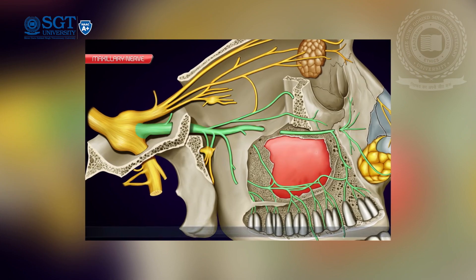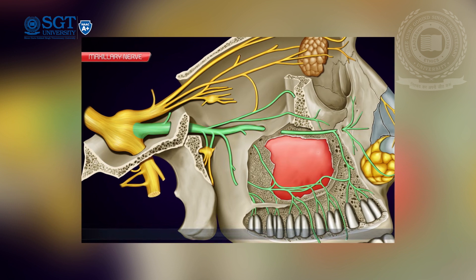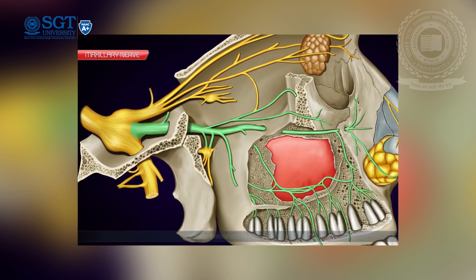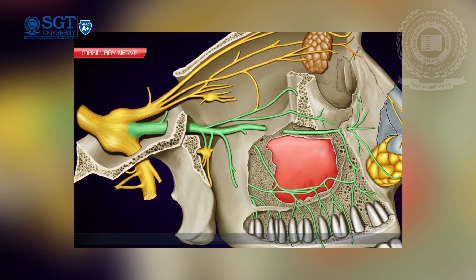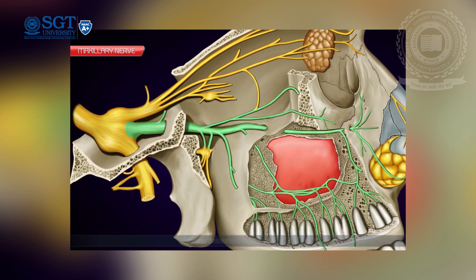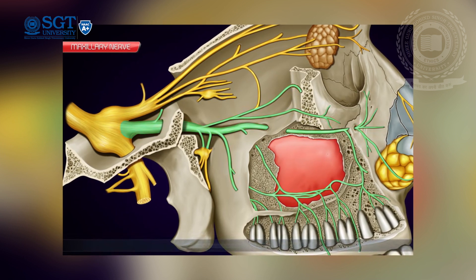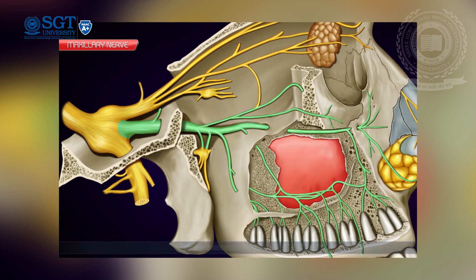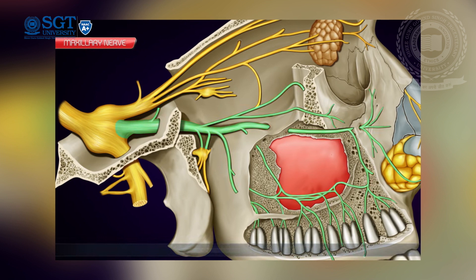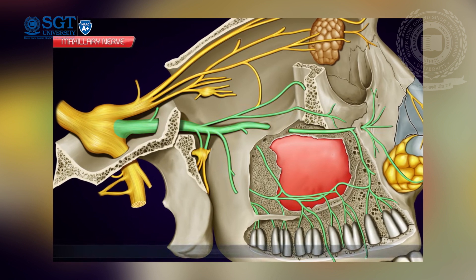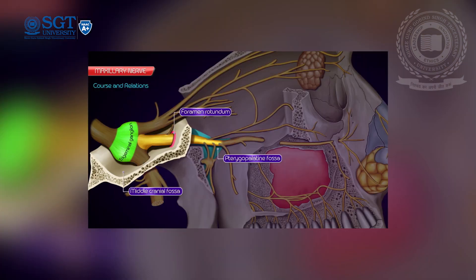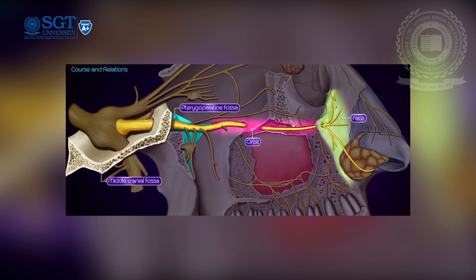The maxillary nerve leaves the endocranium through the foramen rotundum, located in the greater wing of the sphenoid bone, to enter the pterygopalatine fossa. After its entry, it gives branches through the pterygopalatine ganglion, which lies within the fossa. This ganglion further gives orbital branches, nasal branches, pterygoid branches, palatal branches, and the main trunk of the nerve continues forward.